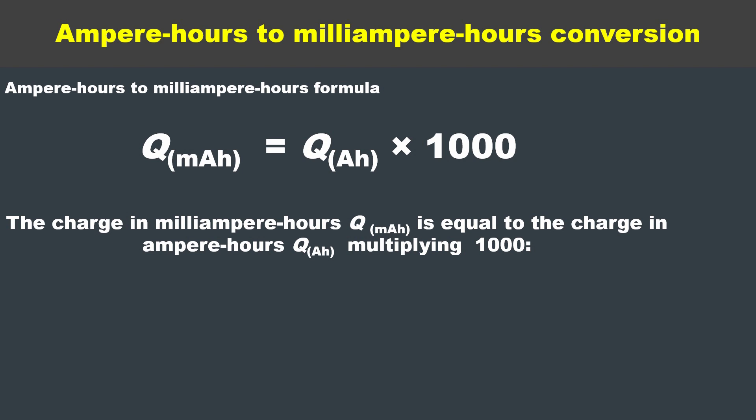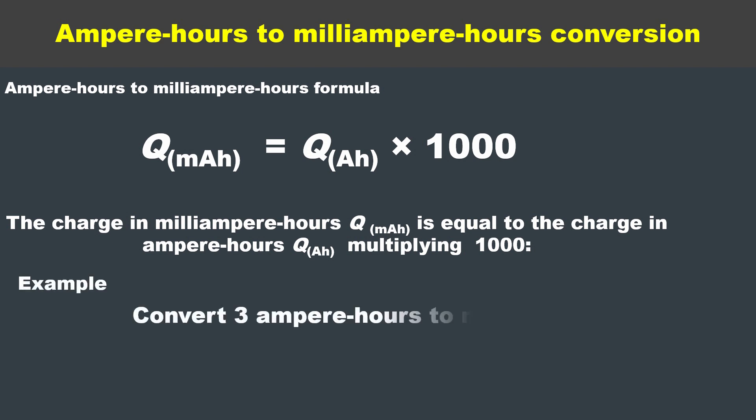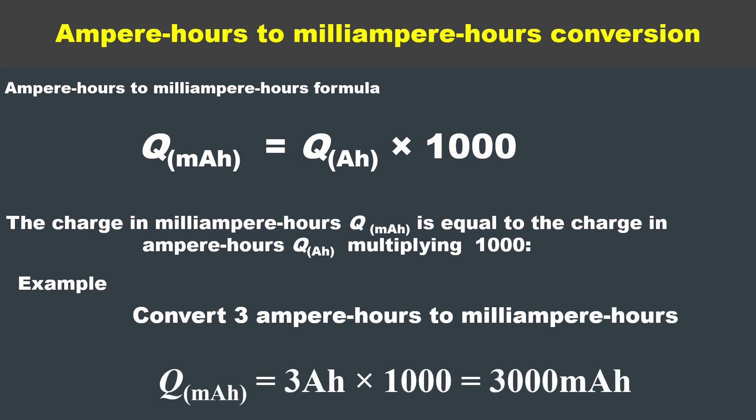For example, convert 3 ampere hours to milliampere hours. Now put the values in the formula: 3 ampere hours multiplied by 1000. The answer is 3000 milliampere hours.